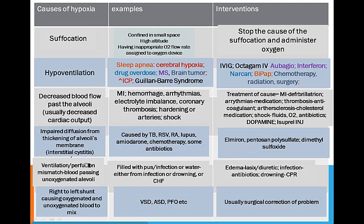A fifth cause is ventilation-perfusion mismatch from blood passing through unoxygenated alveoli. That can be because the alveoli is filled with something else — pus from an infection, water from either infection or drowning, or from congestive heart failure. If it's edema, you give Lasix or a diuretic. For infection, treat with antibiotics. If it was a drowning, you do CPR.